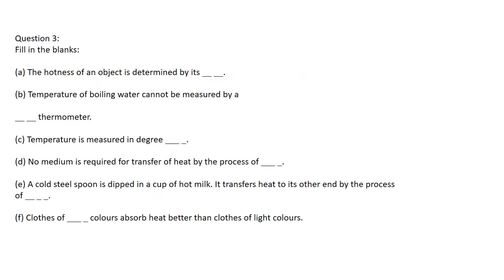Question number three: fill in the blanks. The hotness of an object is determined by its blank. Temperature of boiling water cannot be measured by a blank thermometer. Temperature is measured in degree blank. No medium is required for transfer of heat by the process of blank. A cold steel spoon is dipped in a cup of hot milk — it transfers heat to its other end by the process of blank. Clothes of blank colors absorb heat better than clothes of light colors.